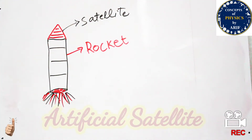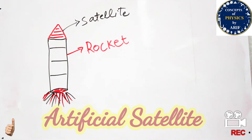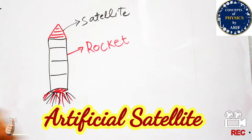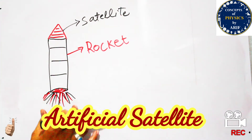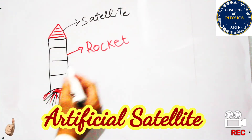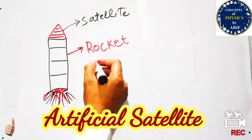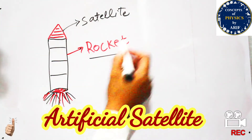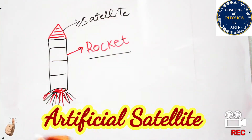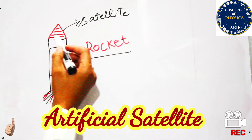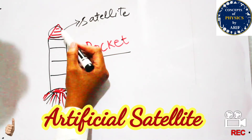Hi guys, welcome to my YouTube channel. In this video we will discuss artificial satellites. Satellites are objects that orbit around the earth, and they are usually released with the help of a rocket into the atmosphere.